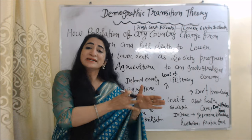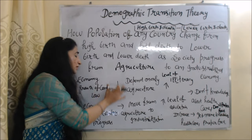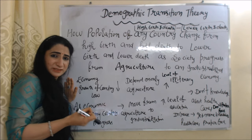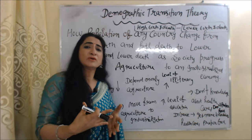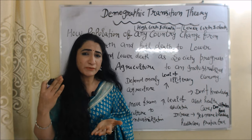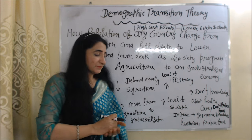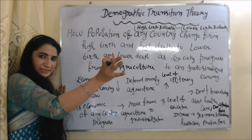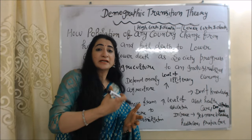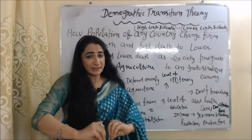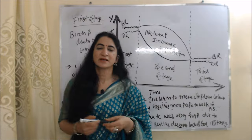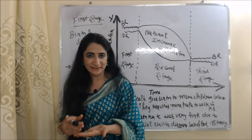As society progresses from an agriculture to an industrialized economy, when economic growth is very low, we depend only on the agriculture sector and the level of illiteracy is very high. As a result, people don't have knowledge about healthcare, so birth rate increases. Plus, we don't have proper food and nutrition, so death rate also increases. On the other hand, when our economy starts progressing and moving toward an industrialized economy, the level of education improves, people get more knowledge about healthcare, birth rate starts declining, and we get more food and nutrition, so death rate also starts declining.